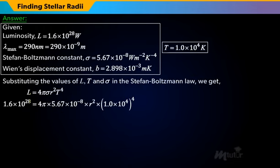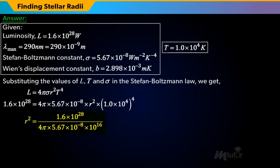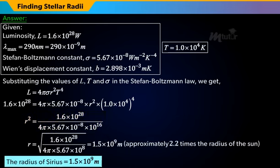Substituting the values of L, T, and sigma into the Stefan-Boltzmann Law, we get R² = 1.6 × 10²⁸ / (4π × 5.67 × 10⁻⁸ × 10¹⁶). Solving, we get the value of the radius of Sirius as 1.5 × 10⁹ meters.